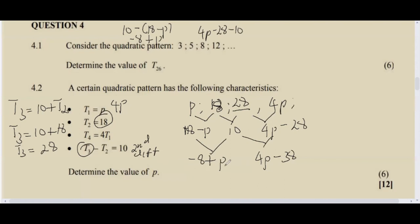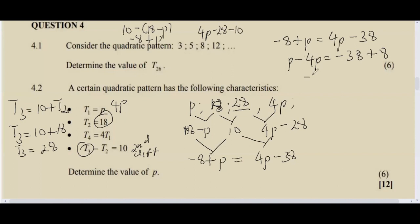Since the second difference is constant in a quadratic pattern, we equate: negative 8 + p = 4p − 38. Solving: p − 4p = negative 38 + 8, so negative 3p = negative 30, and dividing both sides by negative 3 gives p = 10. That's how you determine the value of p. Make sure to practice and pause throughout the video.